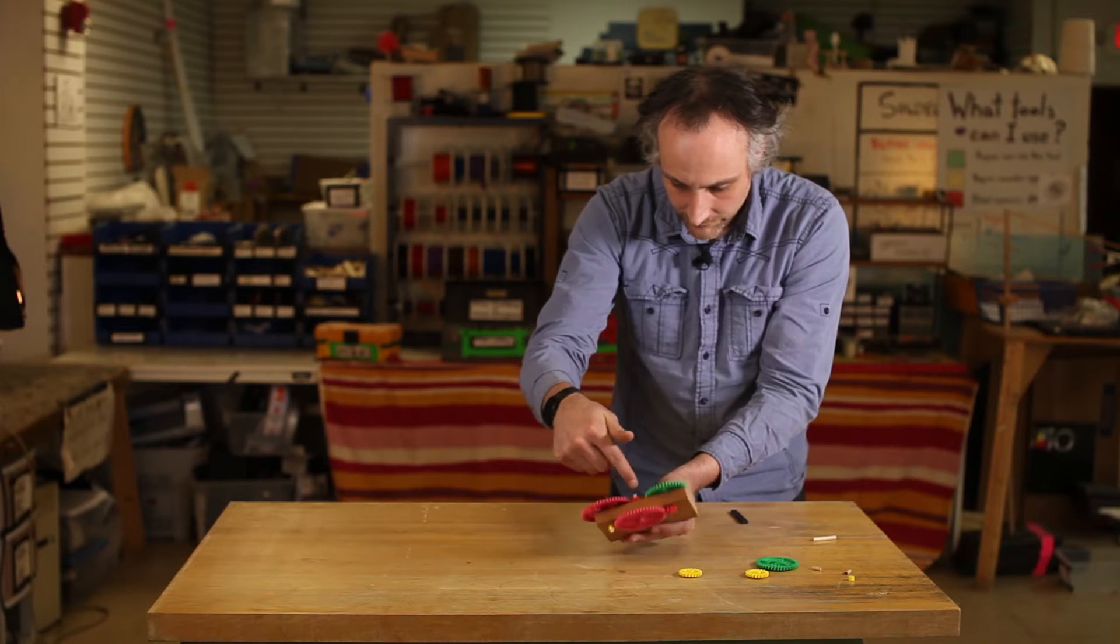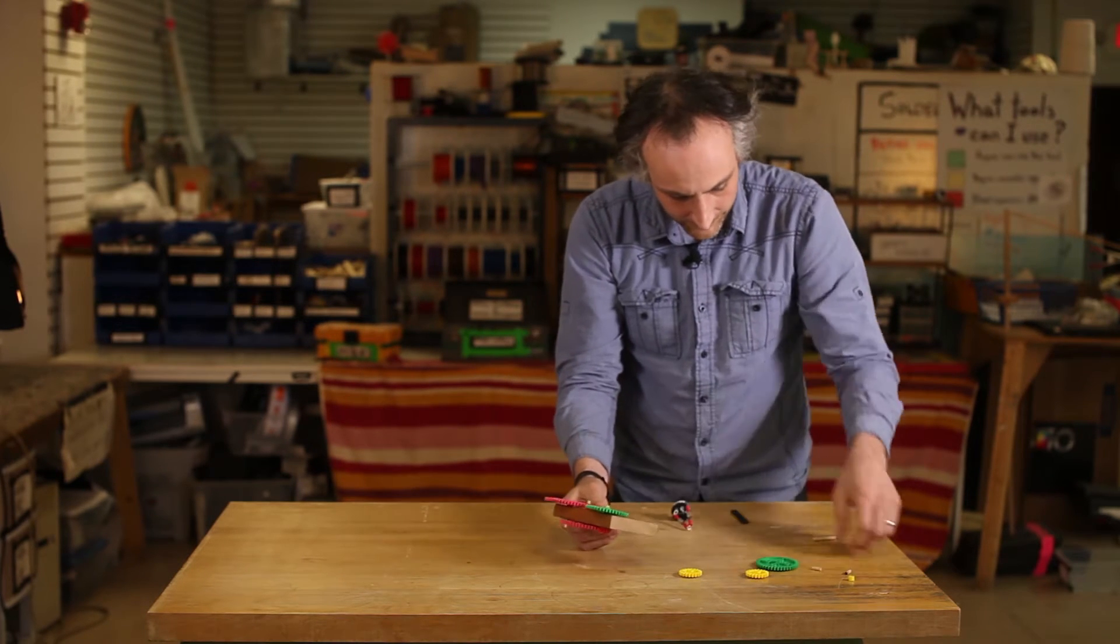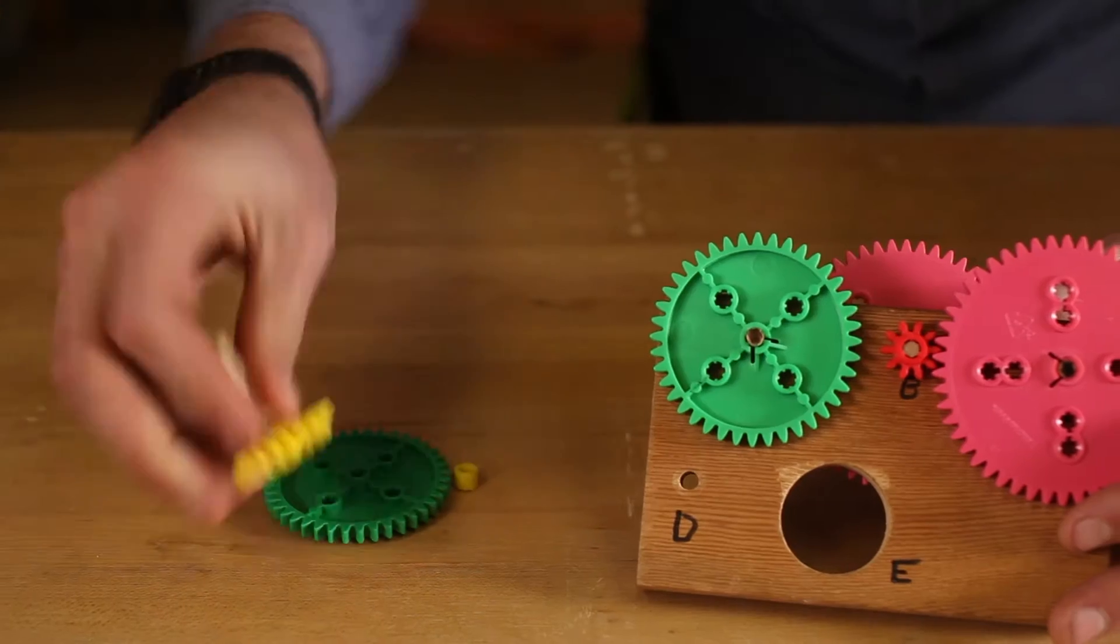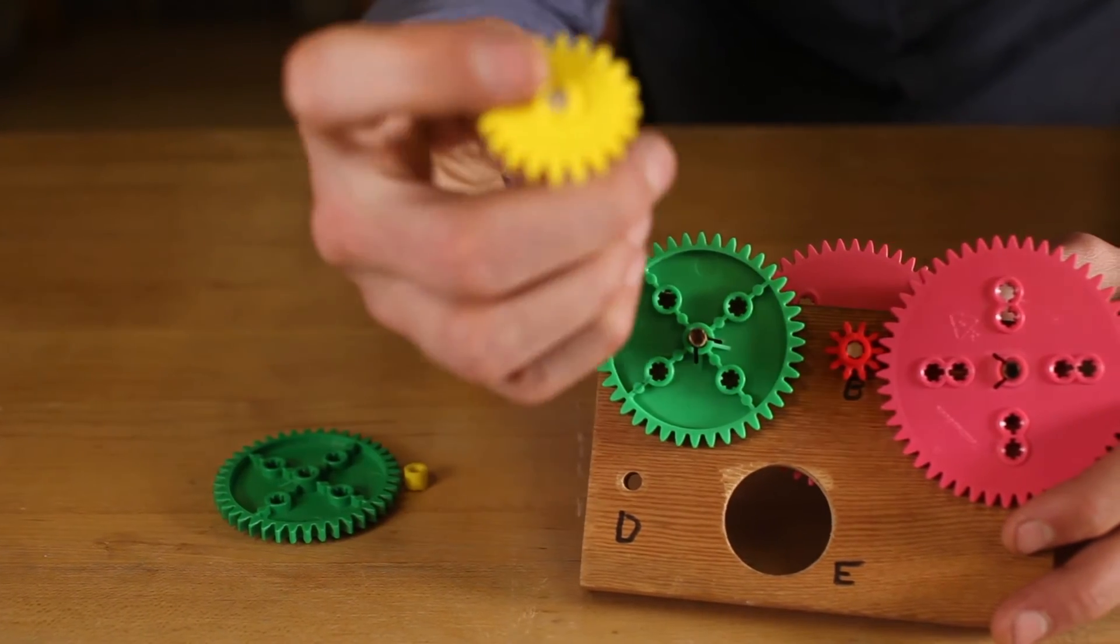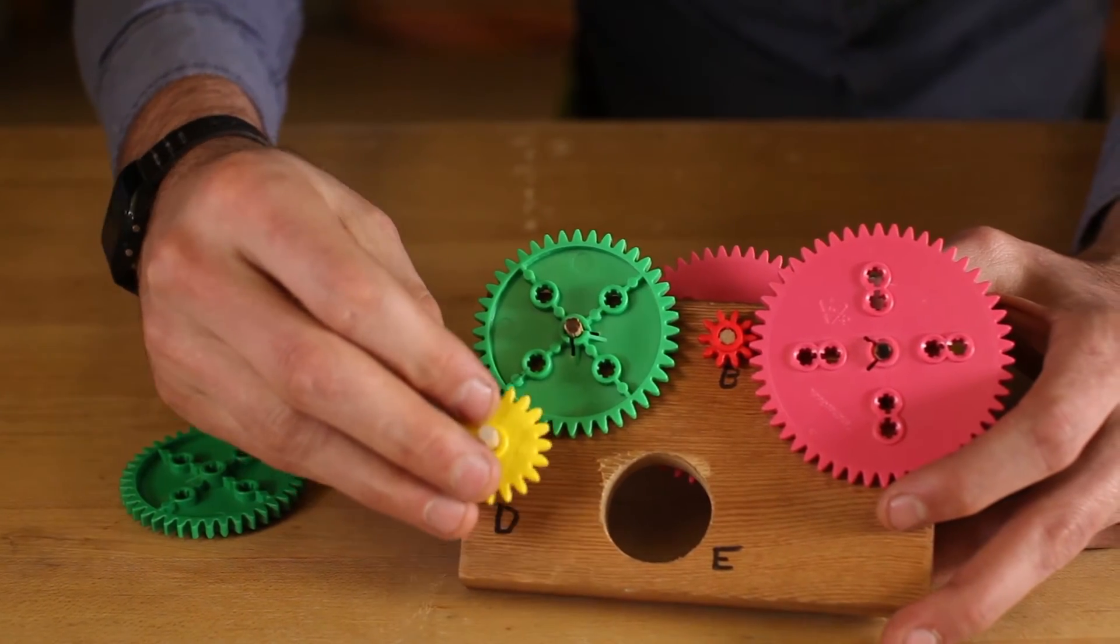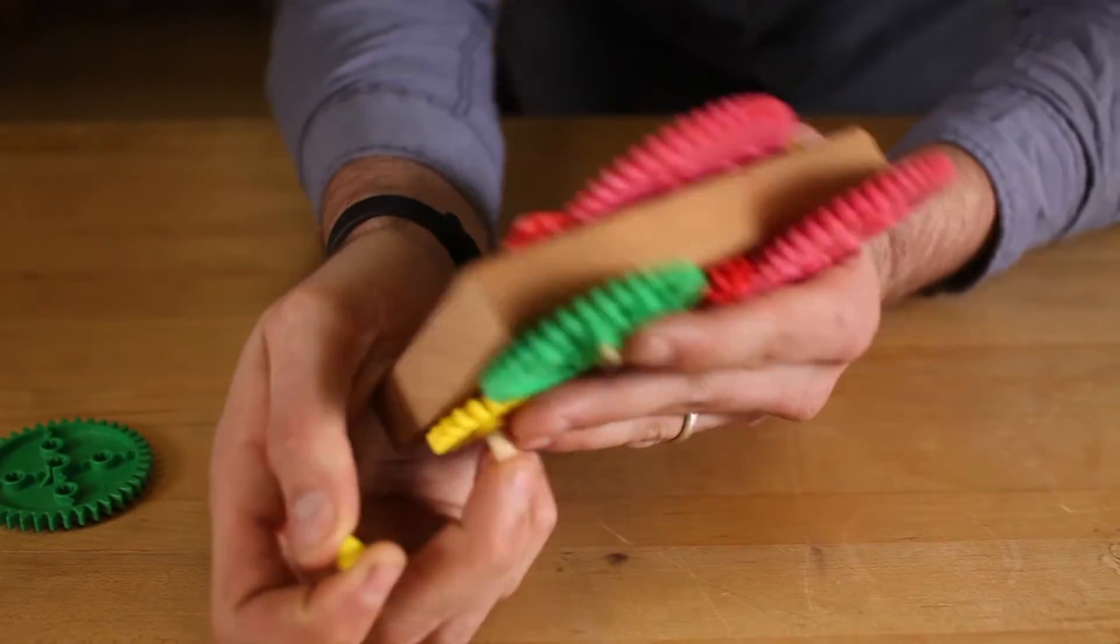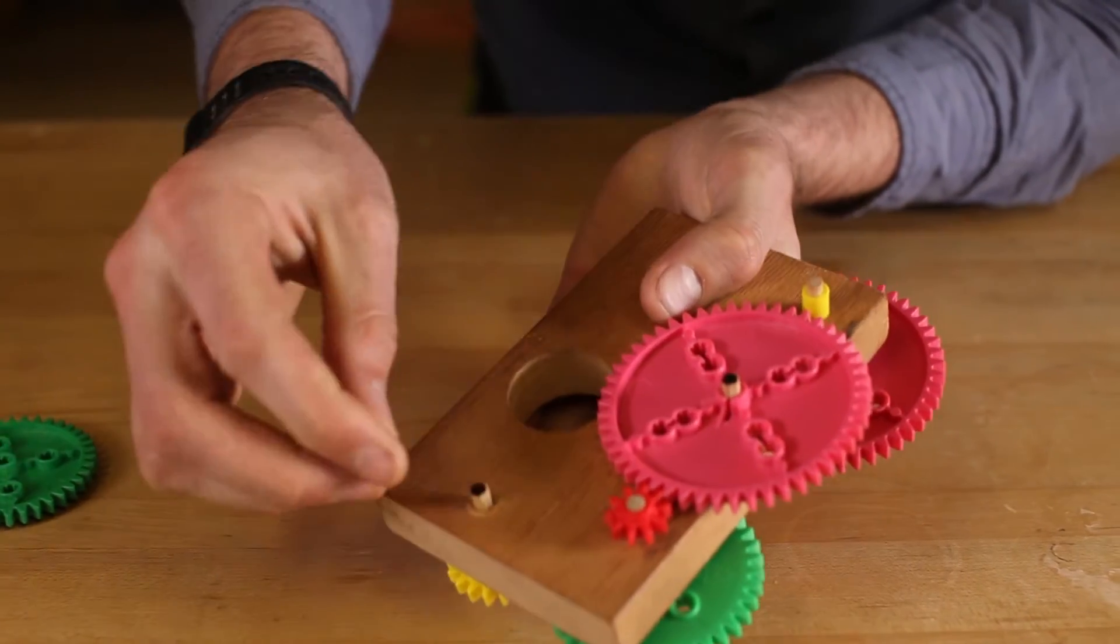So we have this going to there, to there, that spins that, which spins this. And then going into slot D, we're going to have this small 20-tooth gear. It's going to interface with the 40-tooth gear here. And on the other side, I'm just going to have one of these yellow stoppers to hold it in place.